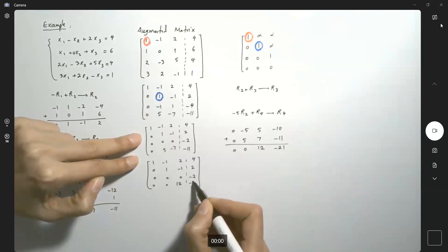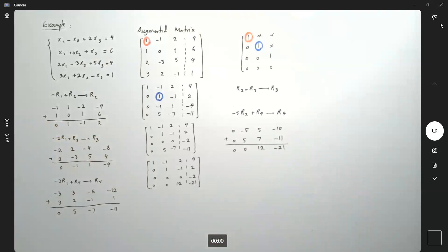Zero, 12, negative 21. Well, we ended up having zero, zero here. We can interchange r3 and r4 and divide this guy by 12 as well. So it makes it a little bit easier to deal with.